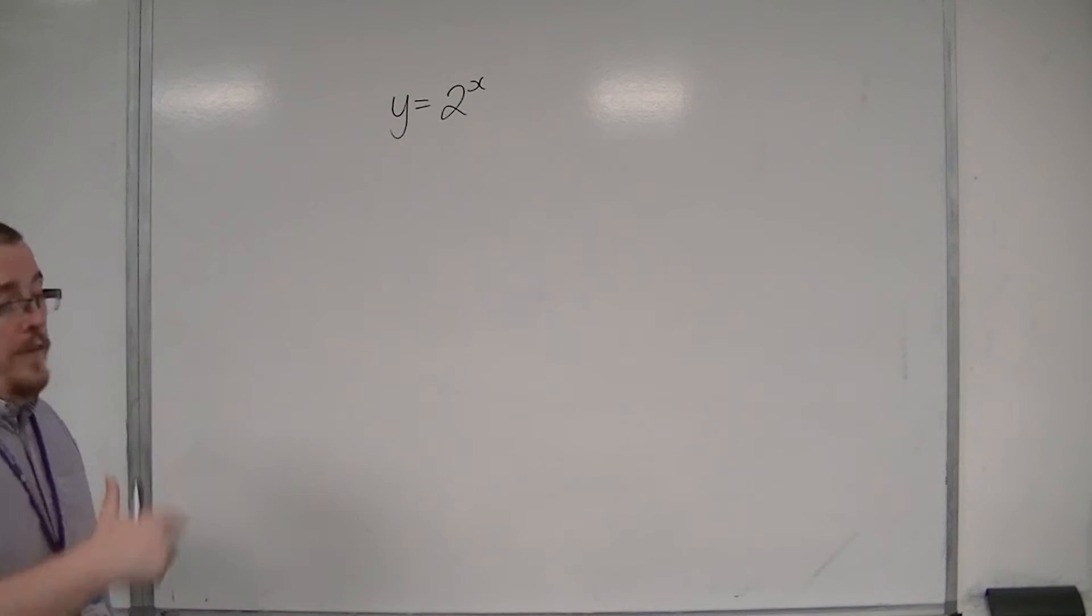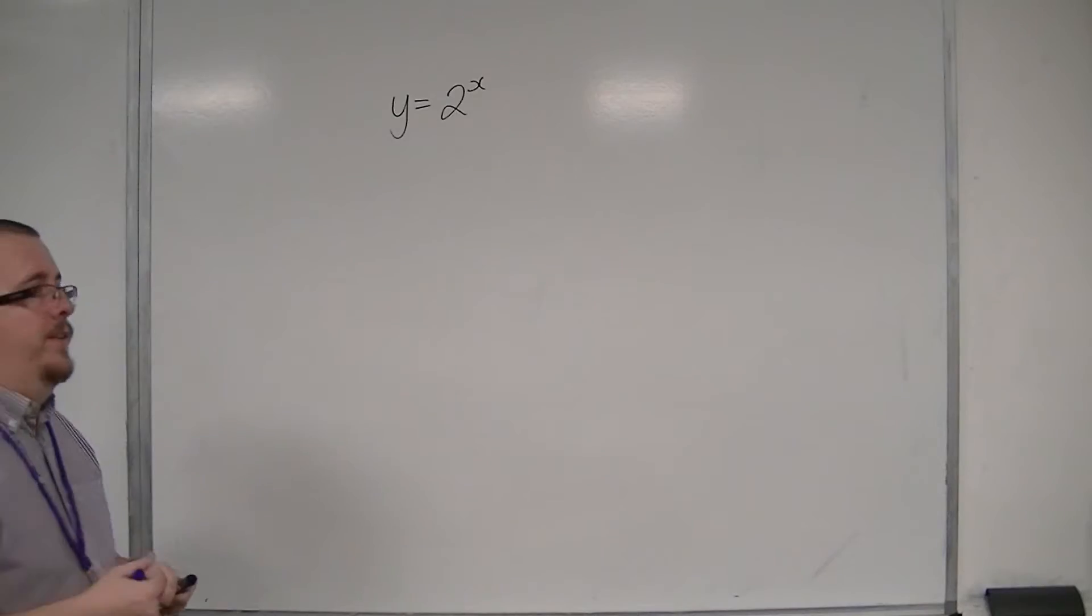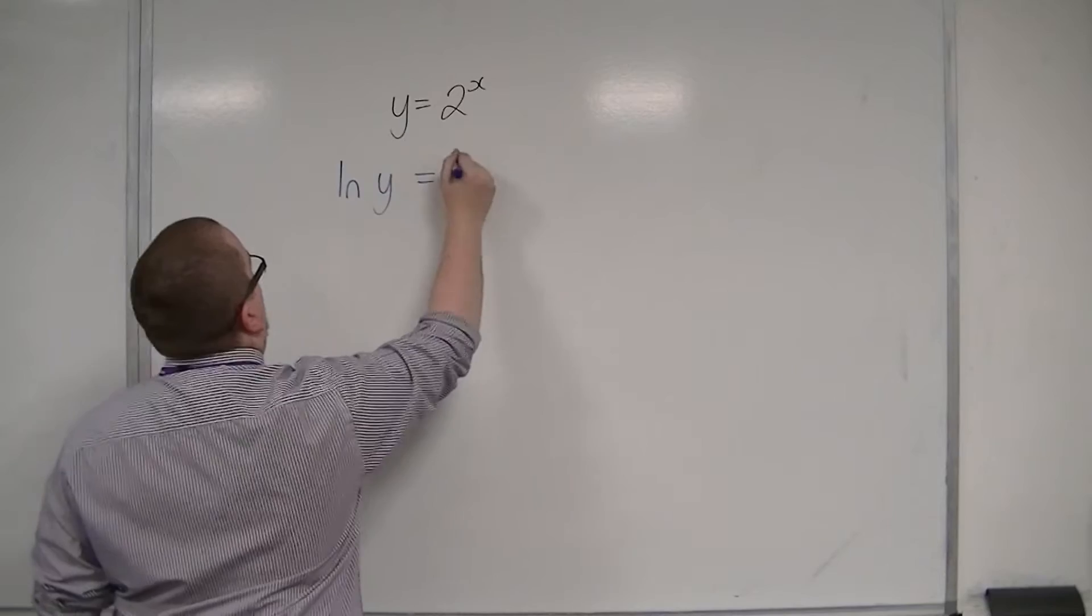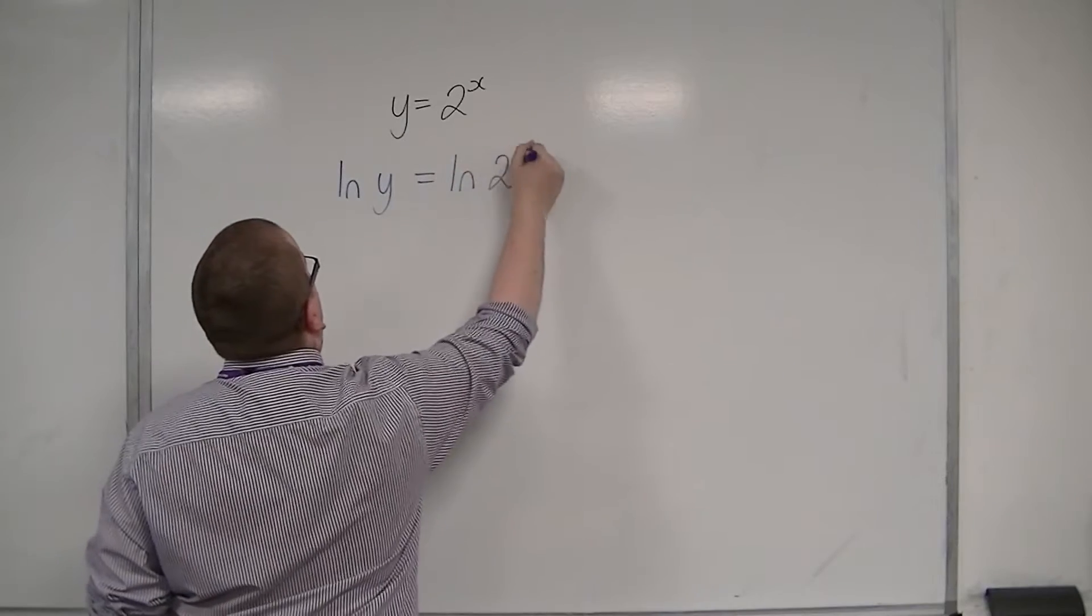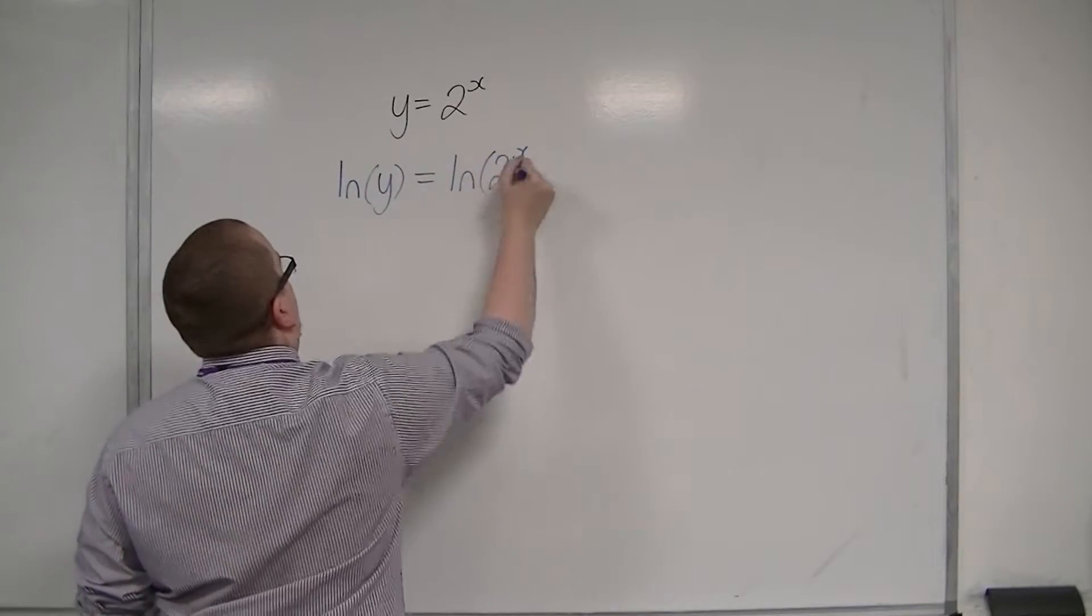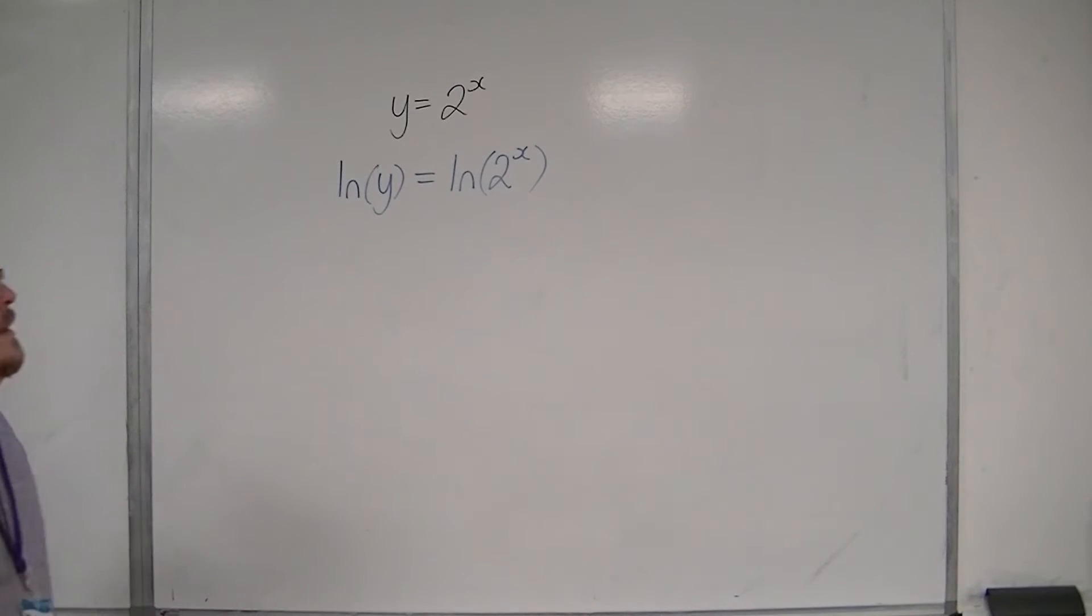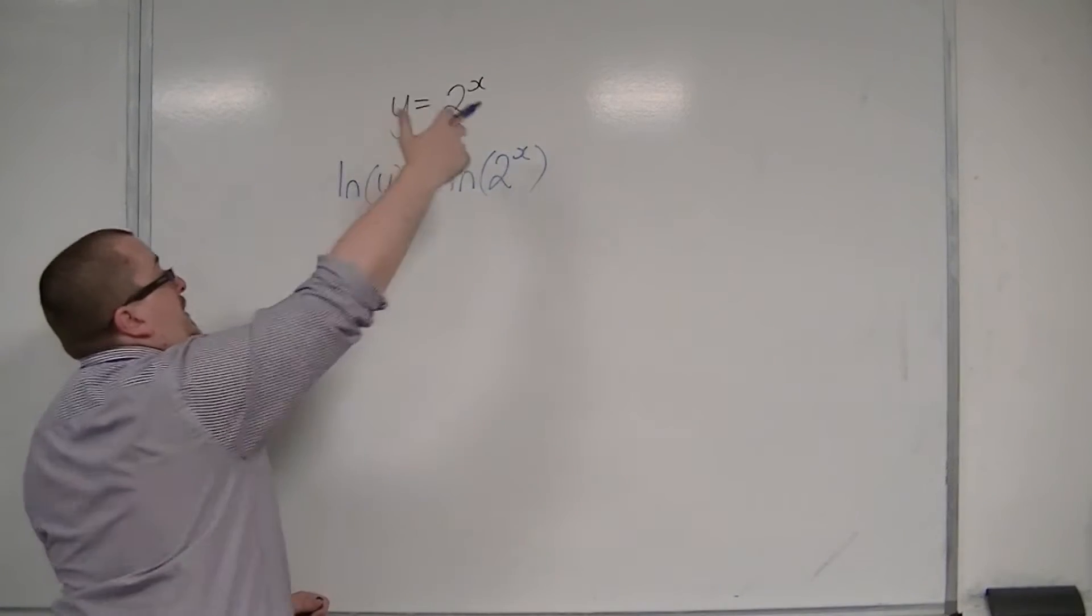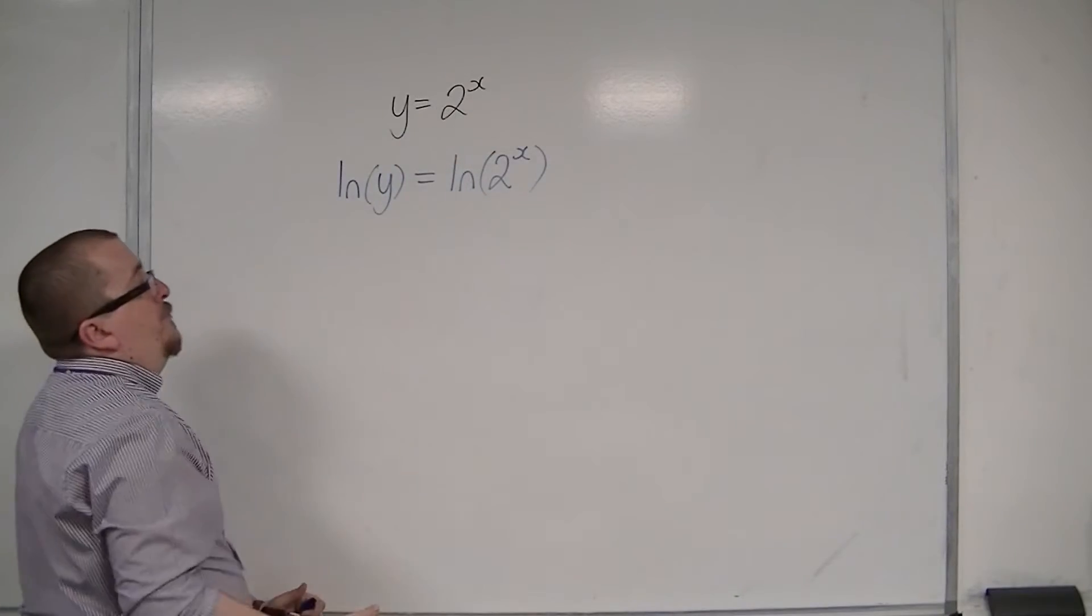So the first thing is to use logarithms. I'm going to log both sides. So we're going to have log of y is equal to log of 2 to the x. Now, the reason why I do that is it simplifies the right hand side, because the x now has to come down to the front of the logarithm.